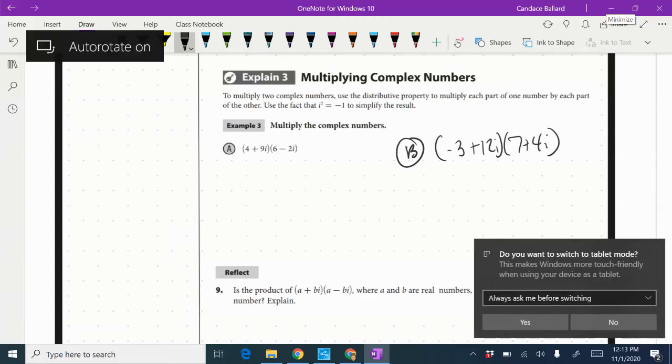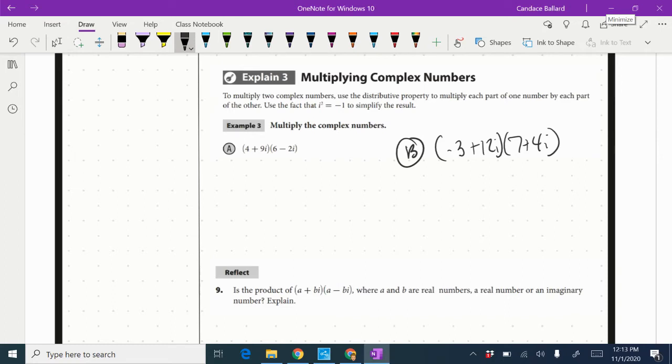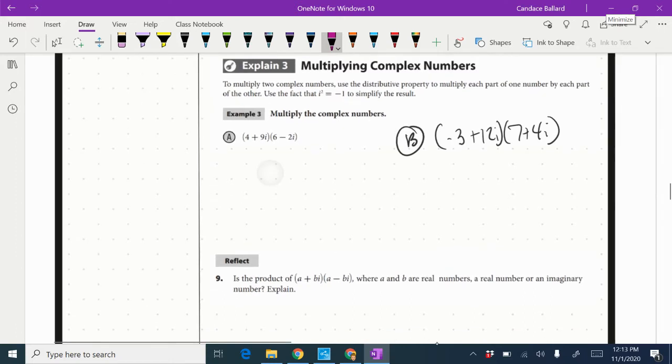We're going to continue topic 4.4, and we're going to do Example 3, where we are now going to multiply complex numbers. So in this first one here, these are going to act just like they would if we were doing this with an x in there for the variable. So we are going to FOIL them.